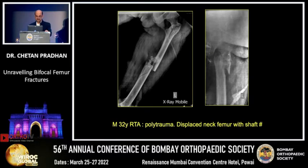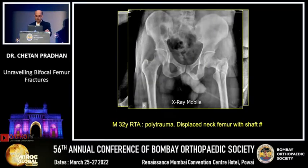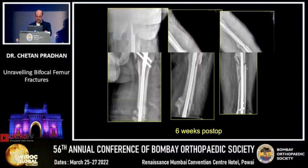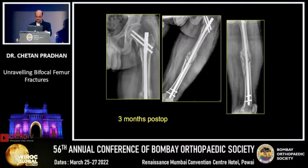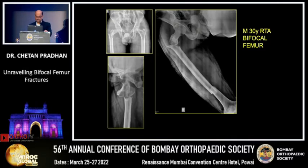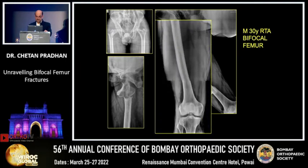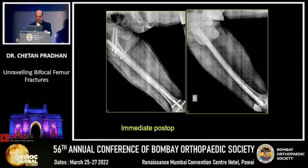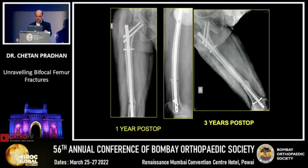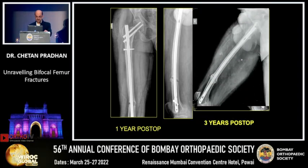Here is another polytrauma case with a displaced neck and shaft. These are the immediate post-op X-rays. At six weeks post-op and three months post-op, the shaft is showing a little callus. This is six months post-op, and it healed at one year. But in another case that looked good on immediate post-op, at six months it auto-dynamized, and at three years post-op the shaft is still not healed.